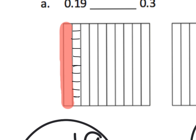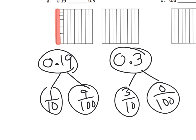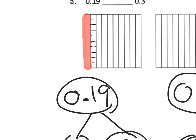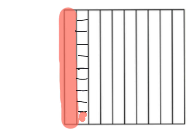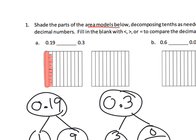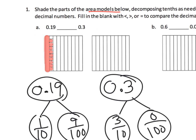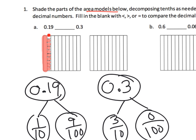Because we need to shade in nine hundredths, I'm going to zoom in and shade in nine hundredths — that's one, two, three, four, five, six, seven, eight, nine. So that is our model for 0.19.